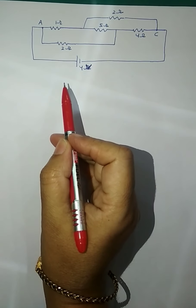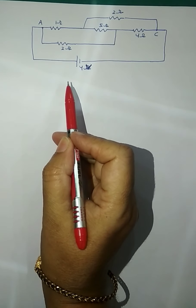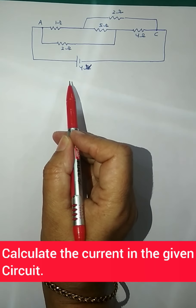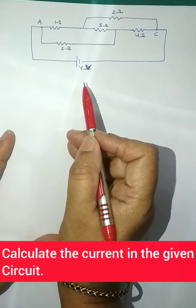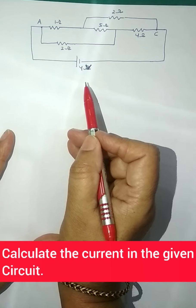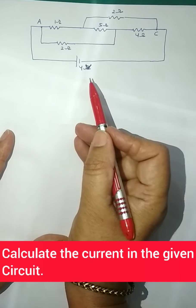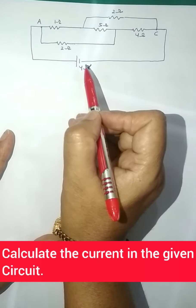Let's see this question — you have to find the current in the given network. Wherever you have four or five resistances, it can be a Wheatstone bridge. Now, it doesn't look like a Wheatstone bridge from any angle, so let's see how you can reduce it to a Wheatstone bridge. We have a battery of 4 volts.